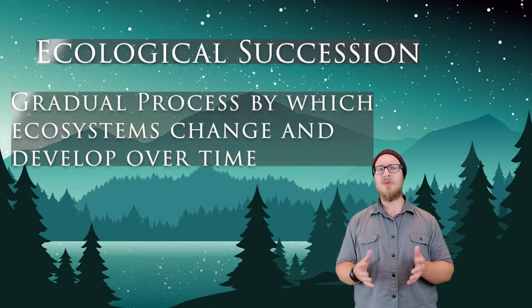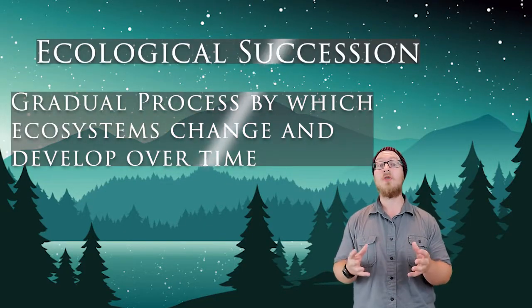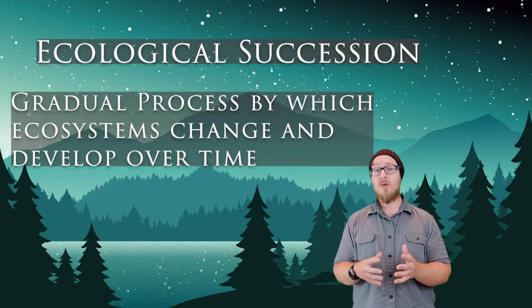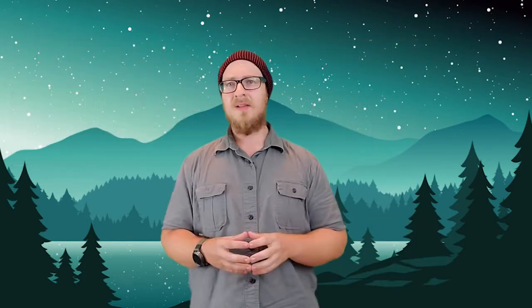So we've looked at changes in environmental conditions and biodiversity in the context of disturbance. But there is also an expected progression in how ecosystems change over time as they develop. Ecological succession is the gradual process by which ecosystems change and develop over time. Let's take a look at this expected process.